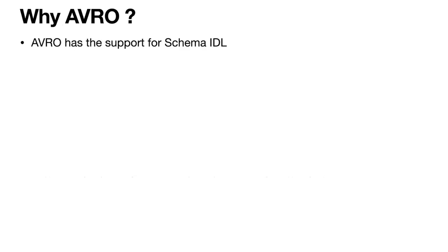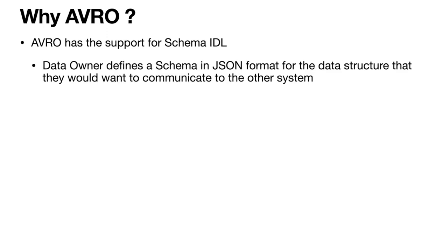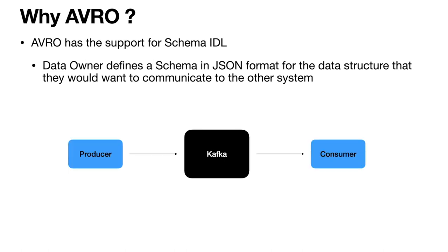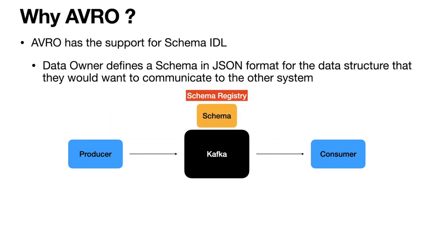Now let's talk about why Avro. Avro has support for a schema interface definition language, meaning the data owner defines a schema in JSON format for the data structure they would like to communicate to the other system. The producer, as the data owner, creates a schema and shares it to the consumer team through a common interface such as schema registry. The consumer can then read the schema and expects the data to be in the same format.